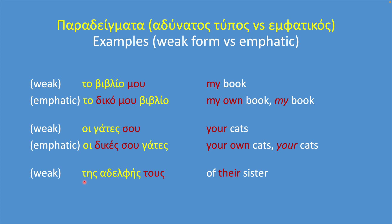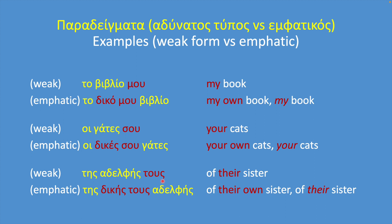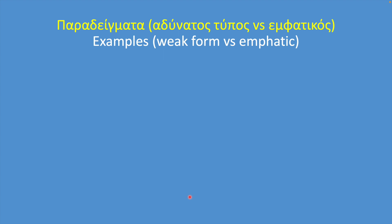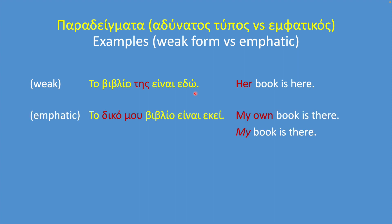Weak type: της αδελφής τους — of their sister. Emphatic type: της δικής τους αδελφής — of their own sister. Let's see the two kinds in sentences. Weak type: το βιβλίο της είναι εδώ — her book is here. Emphatic type: το δικό μου βιβλίο είναι εκεί — my own book is there.